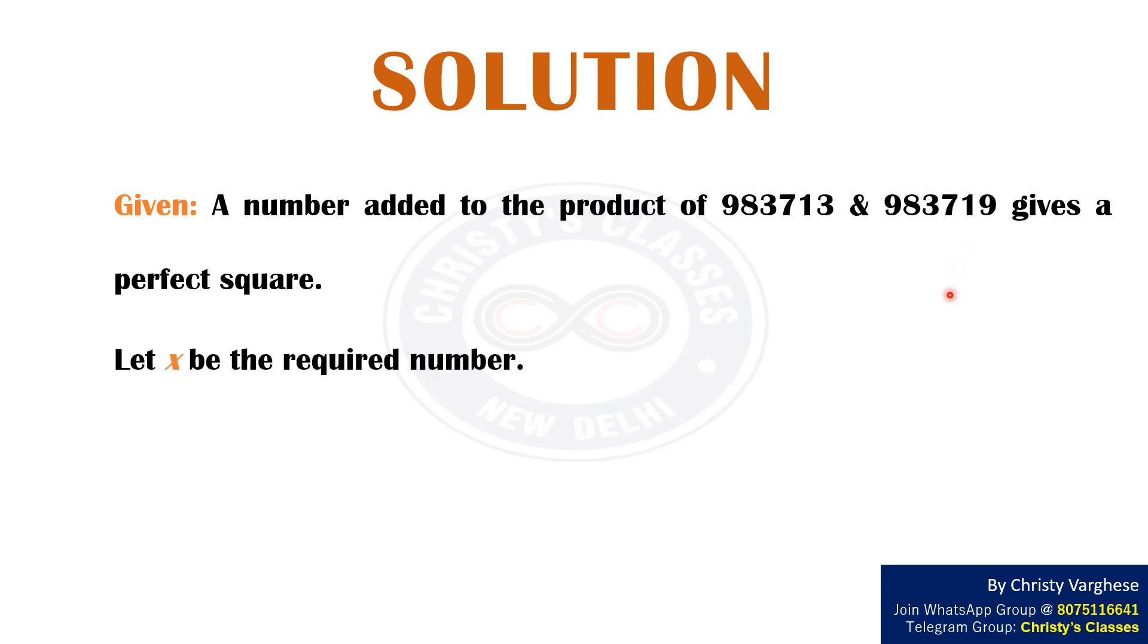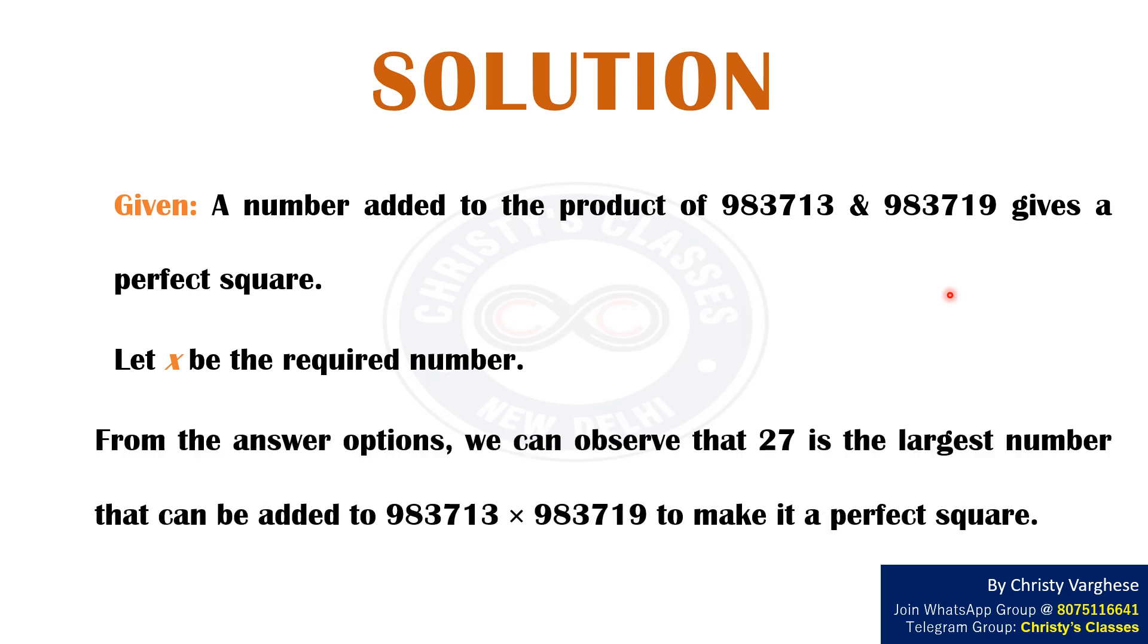From the answer options, we can observe that 27 is the largest number that can be added to 983713 × 983719 to make it a perfect square.